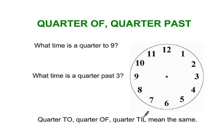To figure out what time a quarter to or a quarter of or a quarter till is, we have to divide the clock into quarters.